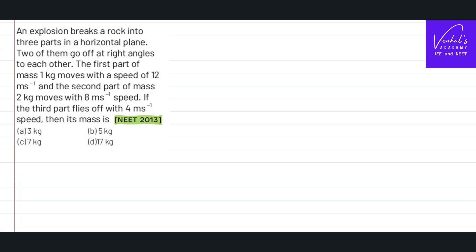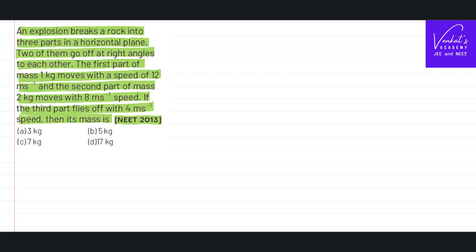In the NEET 2013 question, the problem involves two-dimensional motion, conservation of momentum, and related concepts. An explosion breaks a rock into three fragments in a horizontal plane. Two of them go off at right angles to each other. The first part of mass 1 kilogram moves with a speed of 12 meter per second, the other part of mass 2 kilogram moves with 8 meter per second. If the third part moves with a velocity of 4 meter per second, what is its mass?